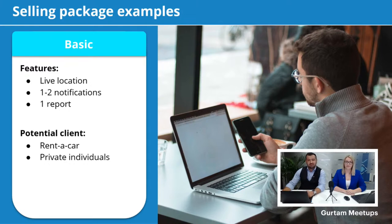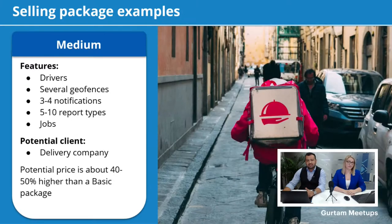In general, we recommend creating several billing plans that apply to different types of customers. One great way to work with clients is by creating three different packages which include different types of services and pricing. The first package would be a basic account including simple live location of the vehicle, basic reports, and one type of notification — oriented as a cheaper option suitable for a car rental company, for example. The second package would be a more advanced account, potentially including geofences, drivers, several reports, and notifications — suited for delivery or courier companies. We would advise pricing it 40 to 50 percent higher than the basic package.